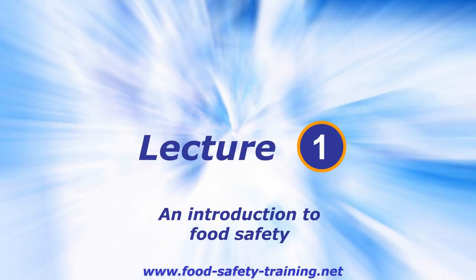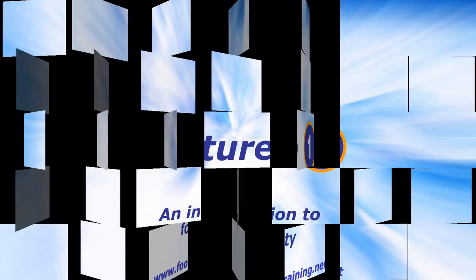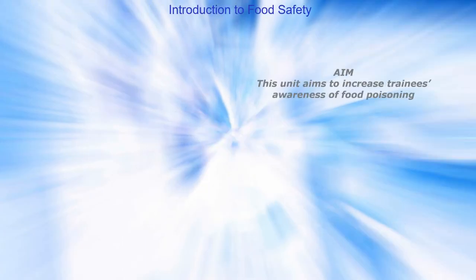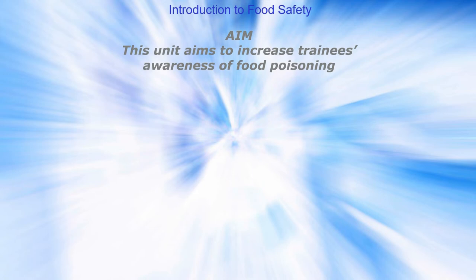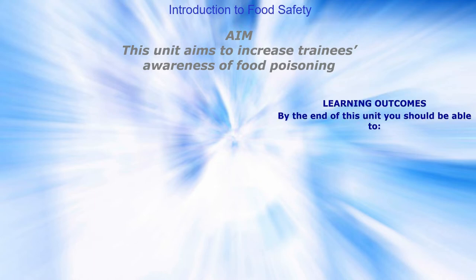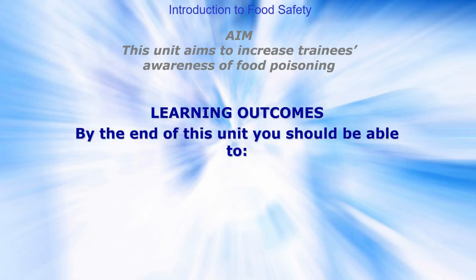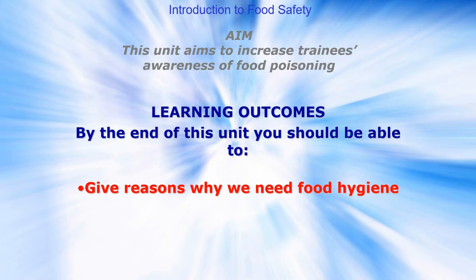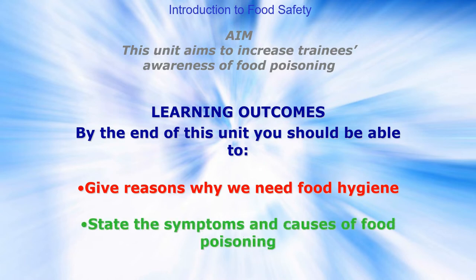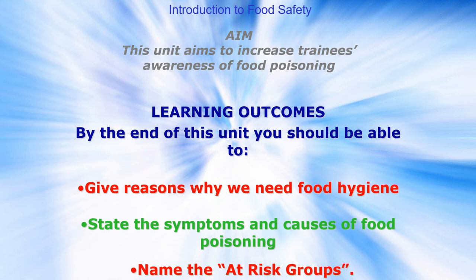Let's have a look at Lecture 1, which is an introduction to food safety. The aim of this unit is to increase your awareness of food poisoning. By the end of this unit you should be able to give reasons why we need food hygiene, state the symptoms and causes of food poisoning, and name the at-risk groups.